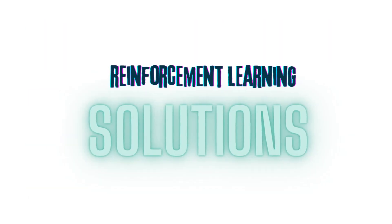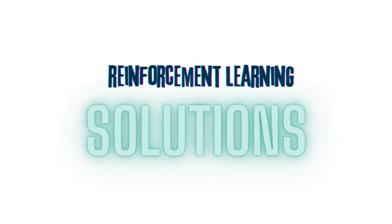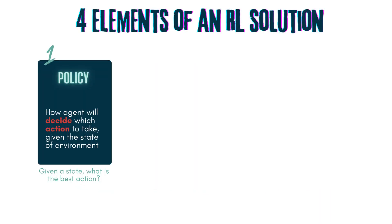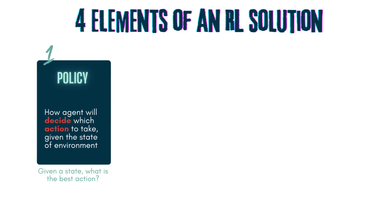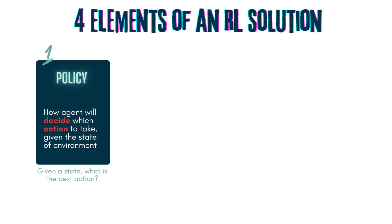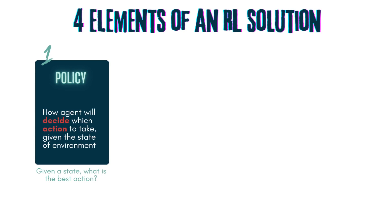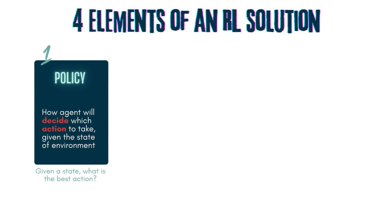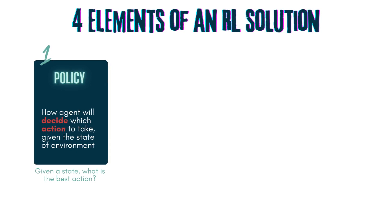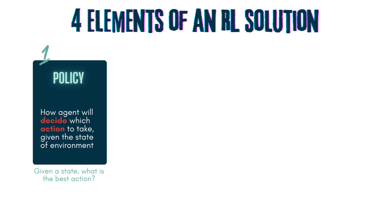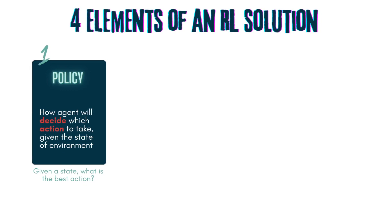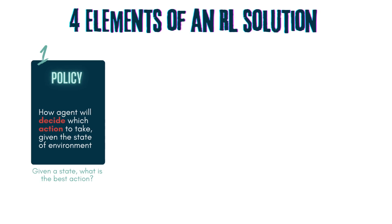Now that we have discussed how RL problems are framed, let's have a look at what solutions can help us solve these problems. Firstly, we have a policy, which we have touched on already. The aim of an RL solution is to find the best policy — the one that involves choosing an action given the current state that will result in a new state associated with a high future stream of rewards. You can envisage a policy as a table that has all the possible states as rows and possible actions across the columns, where an optimal policy fills this table so each row is mapped to the best action.